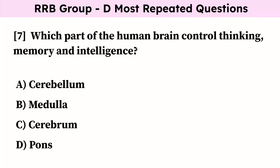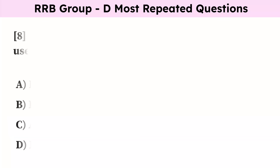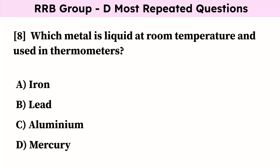Which part of the human brain controls thinking, memory and intelligence? Correct answer is cerebrum. Which metal is liquid at room temperature and used in thermometers? Correct answer is mercury.